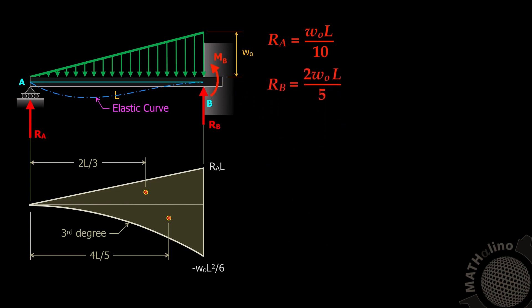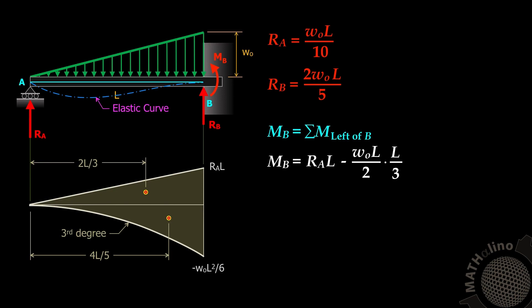For the reaction moment at B, we sum all moments to the left of B. Two forces contribute to MB: RA and the triangular load. Moment at B equals RA times L minus W-naught L over 2 times one-third of L. Substituting RA gives us the value of MB.